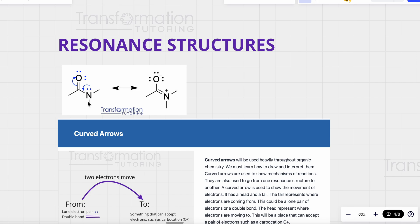The molecule does not equilibrate — it's not the form on the left at one time and the form on the right at another time. It's all of its forms combined at the same time.